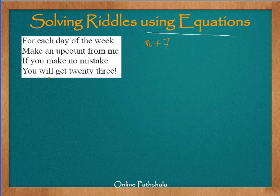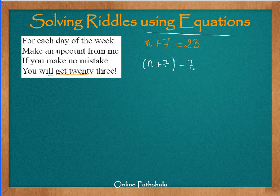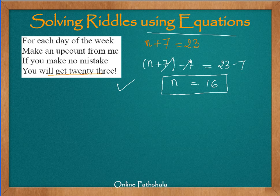The riddle says that if you make no mistake, you will get 23. So n plus 7 gives us 23. Now, to solve this equation, we isolate n on one side. We subtract 7 from both sides — from the left-hand side and the right-hand side as well. This gives us n, and 23 minus 7 gives us 16. Therefore, the number we are looking for is 16. And this is how we have solved this riddle.